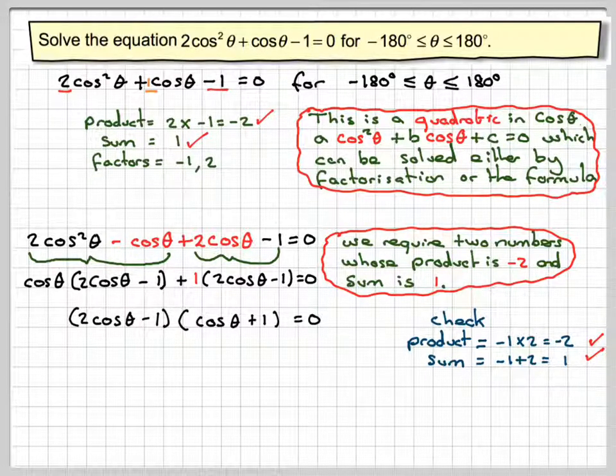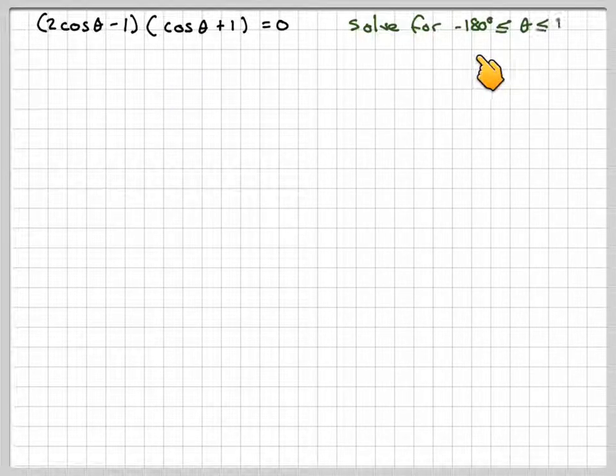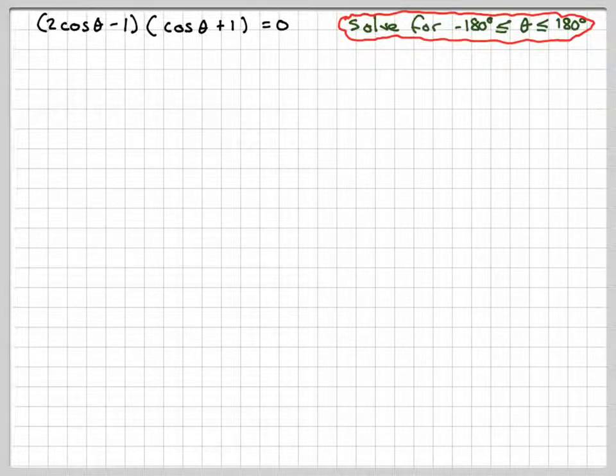You might have other methods of factorizing that and that's fine. And then you say either this is equal to 0 or this is equal to 0 to find the solutions. So we've got 2 cos theta minus 1 times cos theta plus 1 equals 0. Remember we're solving from minus 180 to 180. It's quite important to bear that in mind.